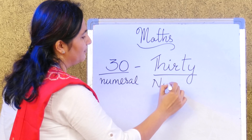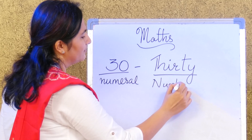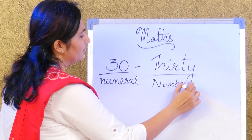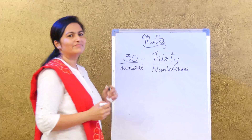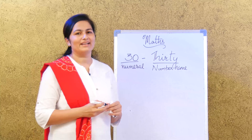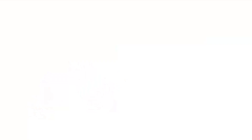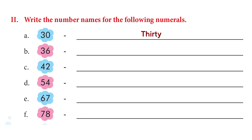You know the number name already — it's just a brush up. The second one would be 36: thirty and six. Can you fill in the rest?